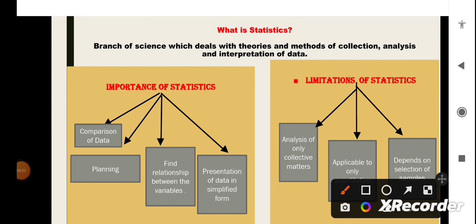Next, we must also know some limitations of statistics. As we know that, data are numbers, which implies that statistics is only applicable to quantitative data. Second is that, data are used in collective sense, not singular. So, with the use of statistics, only the analysis of collective matters is possible. Third and most important point to note is that the result of statistics depends on the sample. So, if the selection of sample is biased or it has some error, the result will also be affected.